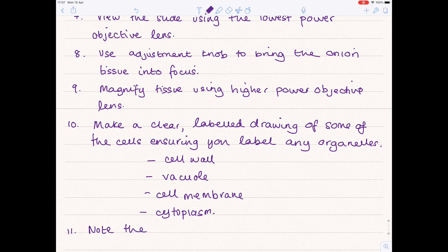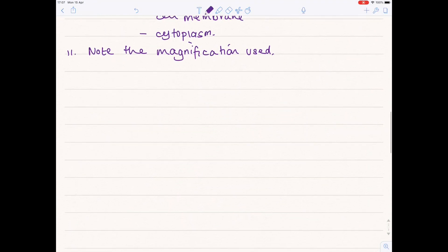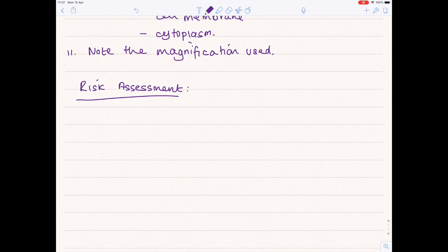Note the magnification used. A risk assessment, because it's a practical, is always essential. What are the potential dangers here? Well, most likely you'll use a knife in order to cut up that onion in order to obtain the single layer of onion tissue. So take care when using the scalpel.